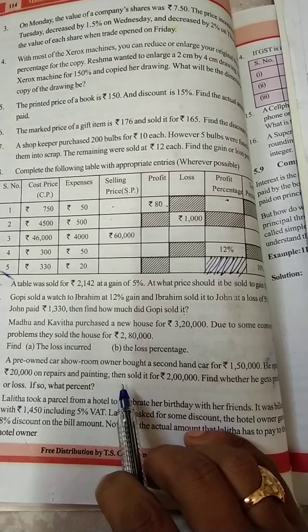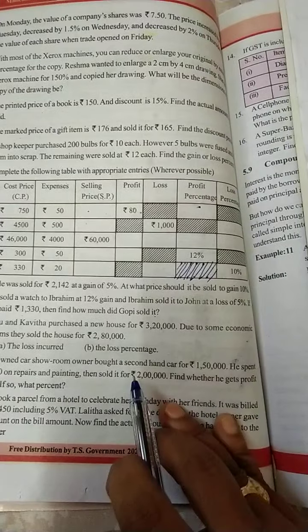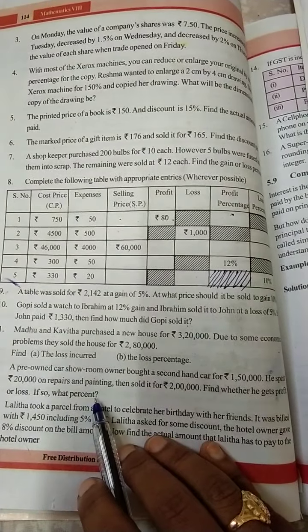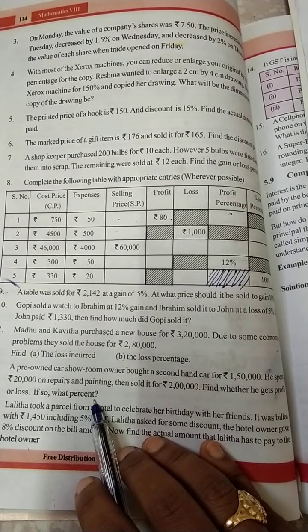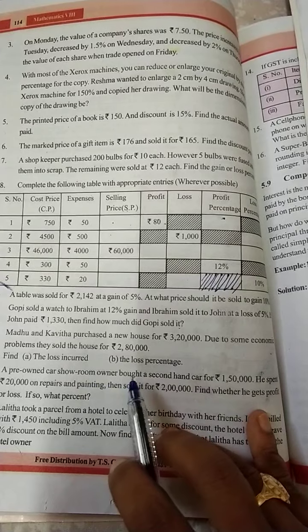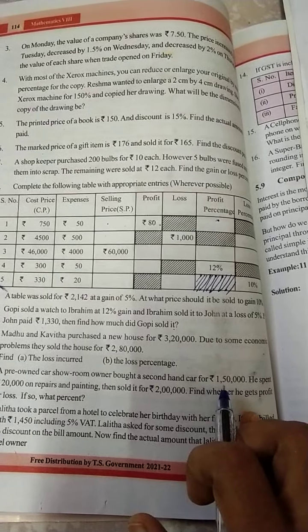Then sold it for 2 lakh rupees. Find whether he gets profit or loss, if so what percent. So actually, one showroom owner bought a second-hand car, which is cost price 1 lakh 50,000 rupees.